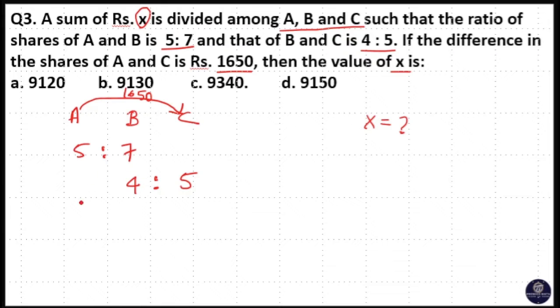Here you know the rule. C is empty here, so I will extend 7 here. A is here empty, so I will extend 4 here. When you multiply 5 into 4, 20. 20 is to 7 into 4, 28. 7 into 5, 35.